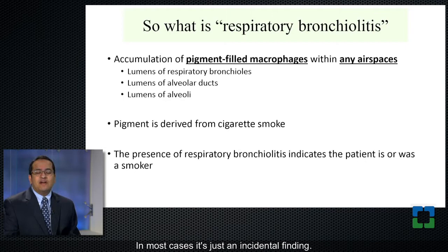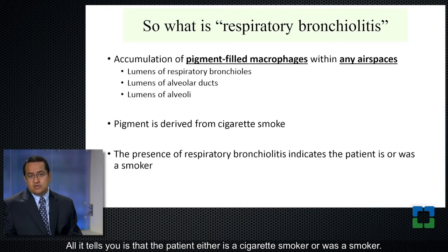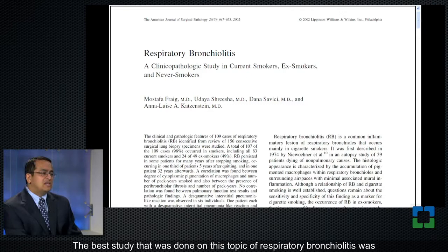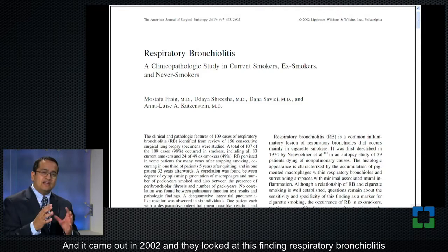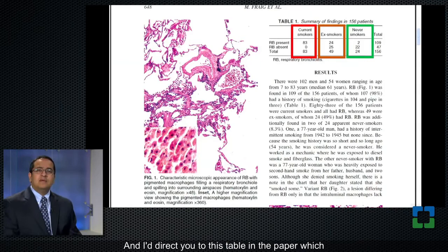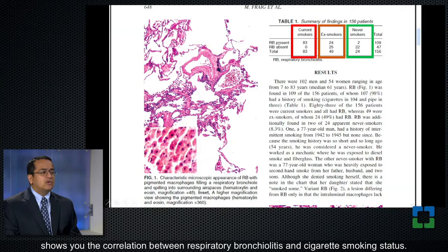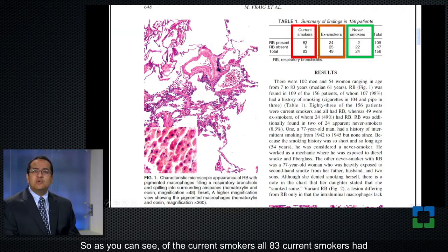What's the significance of this finding? In most cases, it's just an incidental finding — all it tells you is that the patient either is a cigarette smoker or was a smoker. The best study done on this topic was by Dr. Kadzenstein; the first author was Dr. Frigg. It came out in 2002, and they looked at respiratory bronchiolitis and tried to correlate it with cigarette smoking history. I'd direct you to a table in the paper which shows you the correlation between respiratory bronchiolitis and cigarette smoking status.